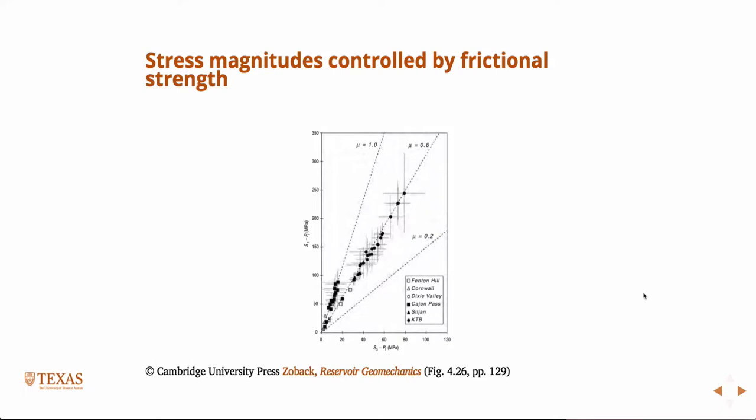This is data from very deep wells where direct measurements of S1 and S3 were done. If you plot all the data from various deep wells, it stacks up on a line corresponding to a friction factor of 0.6. Unless you know better, the friction of rock is always 0.6 - that's a rule of thumb. Of course there are error bars on this data, so it's not perfect, but for the most part it stacks up on 0.6, which implies continual slip is occurring.